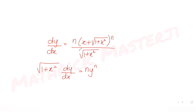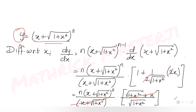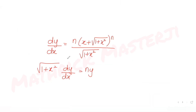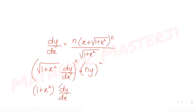So we get √(1 + x²)·dy/dx = n·y. Now we need d²y/dx² and dy/dx. Squaring both sides gives (1 + x²)(dy/dx)² = n²y².